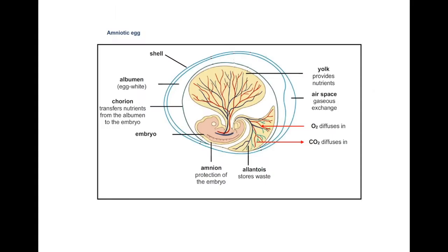Let's also revise the amniotic egg. An ovoviviparous organism is one where the egg forms and hatches inside the female's body, and the female gives birth to live young. The yolk has nutrients for development of the embryo. The air space is important for gas exchange. The allantois protects the embryo by removing waste. The amnion contains amniotic fluid, which protects the embryo from mechanical injury by absorbing shock, from desiccation, and acts as a temperature regulator. The albumen also has nutrients for the developing embryo. The shell is a hard outer covering rich in calcium which protects the embryo.